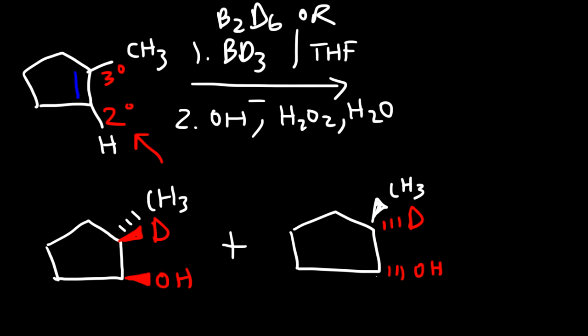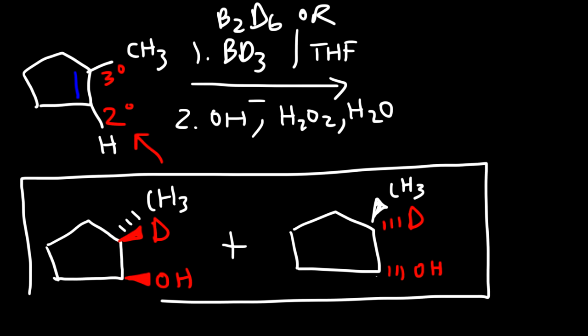Both products represent correct answers — they are enantiomers that can be formed in this reaction. However, on a multiple choice exam, only one of these two answers will be listed, and you need to identify the right answer from the wrong ones. Make sure you understand this reaction well, as it is a very common exam question requiring knowledge of both regiochemistry and stereochemistry.